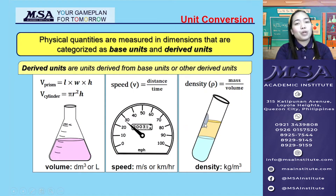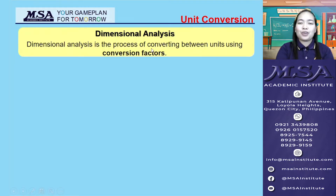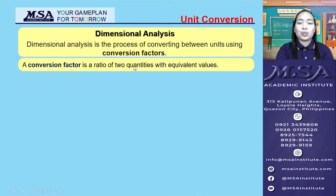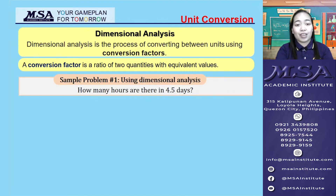Physical quantities are expressed in multiple units. So in this video, we'll be talking about the process of converting between units using conversion factors. A conversion factor is a ratio of two quantities with equivalent values that is used to change one set of units to another.